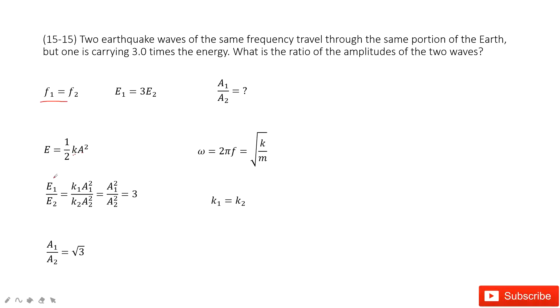Now if we want to find the ratio, E1 over E2 is 3, and then we can input it as k1 A1 squared over k2 A2 squared. A1 over A2 is what we want, but how can we deal with k1 over k2?